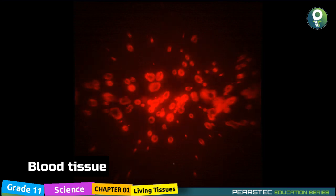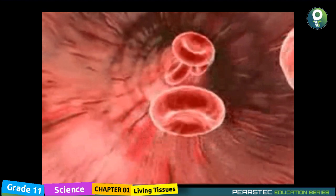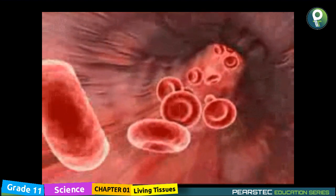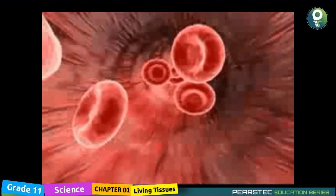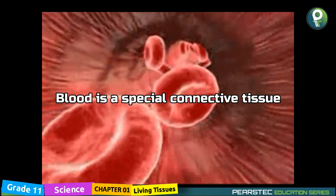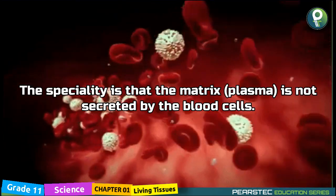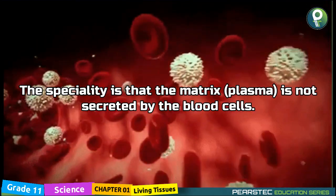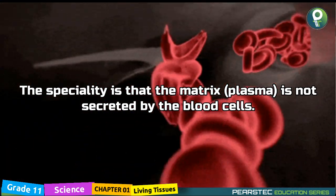For example, blood tissue and bone tissue. When you are looking at a blood drop which is flowing when you had an injury or from anywhere on an animal's body, you should know that blood is a special connective tissue. The speciality is that the matrix — or what you call plasma — is not secreted by the blood cells.